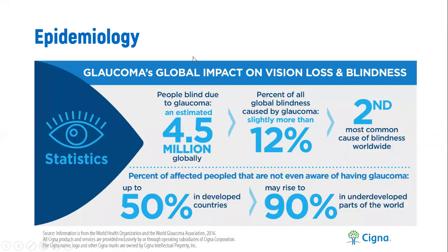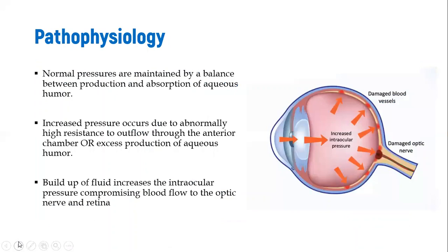In terms of distribution, glaucoma is the second most common cause of blindness and accounts for almost 12 percent of all cases of blindness globally. So how does this occur? We've already said it is because of an increase in intraocular pressure, but how does that really happen?